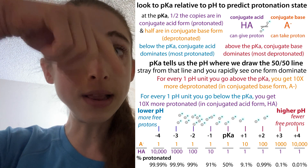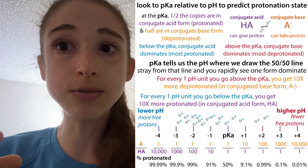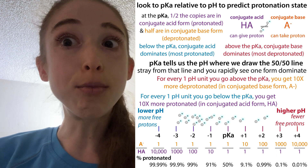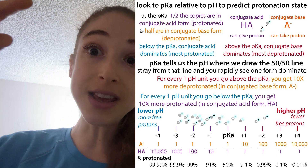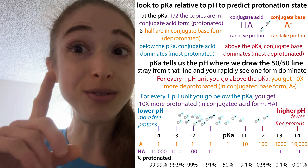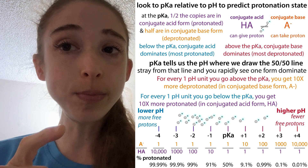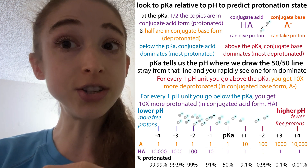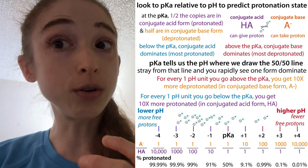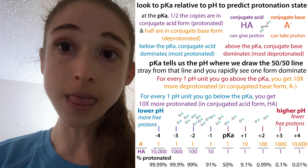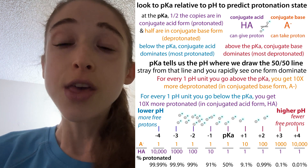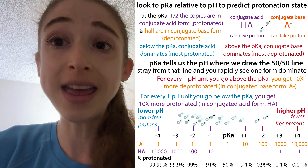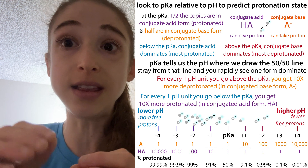And if you go one pH unit below the pKa, you have more protons around, so you're going to have more of it in the protonated conjugate acid form. So above the pKa, more of it's deprotonated; below the pKa, more of it's protonated — with a tenfold change for each one pH unit. Two pH units gives you a hundredfold difference, three pH units a thousandfold. So any time you're about three pH units away from the pKa, you can just assume that almost all of it is going to be in one form.